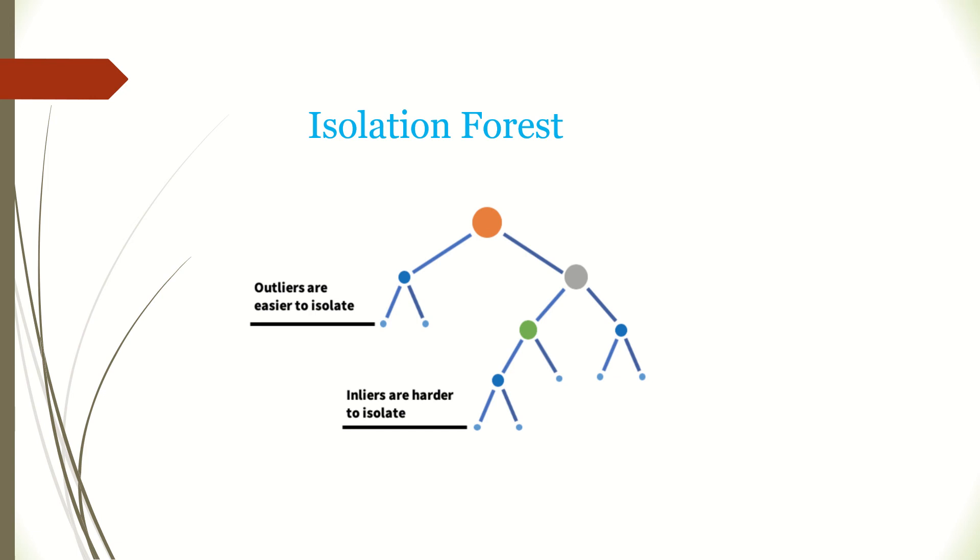Which our decision tree can leverage and branch them out. Hence the basic concept here is all the anomalous points or suspicious points will be present very close to the root node, as indicated in this particular slide.